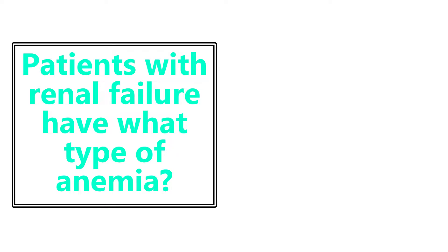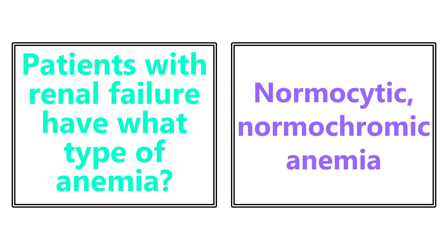Let's get started. Patients with renal failure have what type of anemia? This is going to be a normocytic, normochromic anemia.